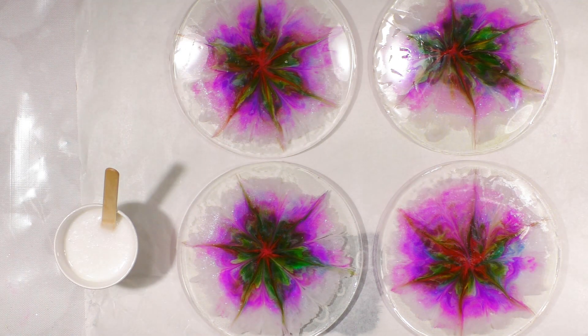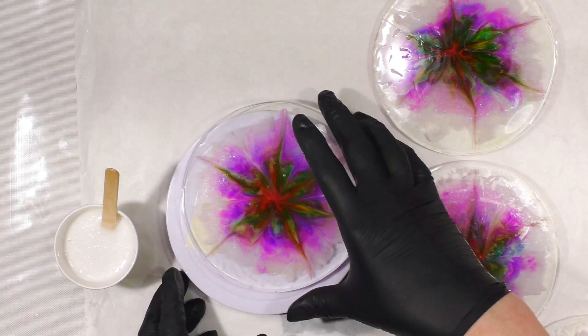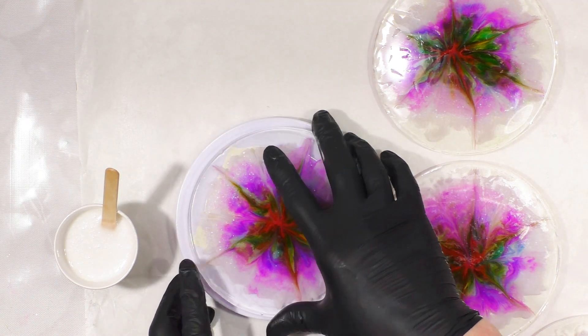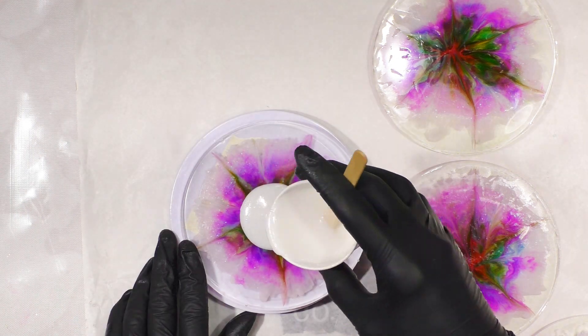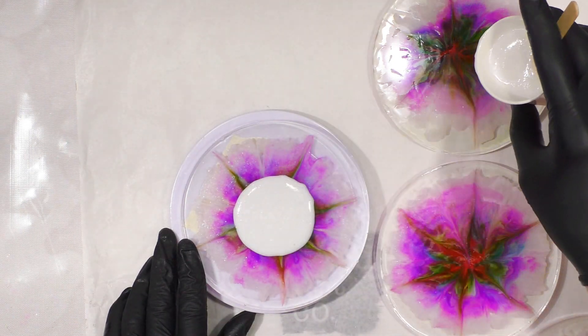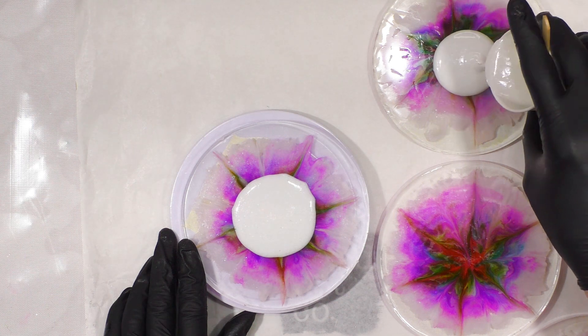And you have a 10 minute working time to coat all of them. So you have to go kind of quickly. I'm going to pour a little puddle of white into the center of all of them.